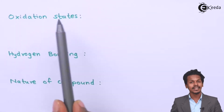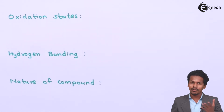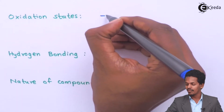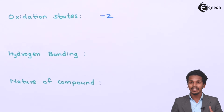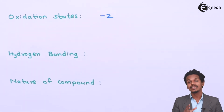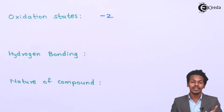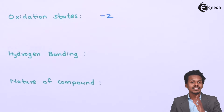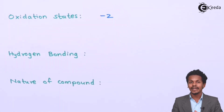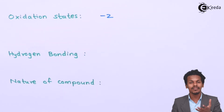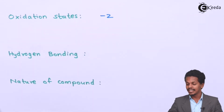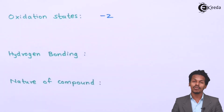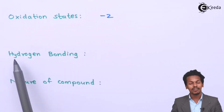The next point is oxidation state. Oxygen commonly acquires a -2 oxidation state. We cannot increase the oxidation state of oxygen unless it is in a molecule like OF₂. In the case of dioxygen (O₂), oxygen acquires a zero oxidation state.